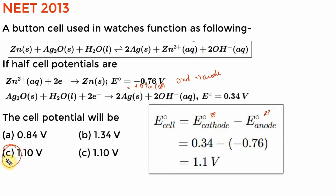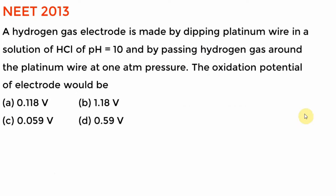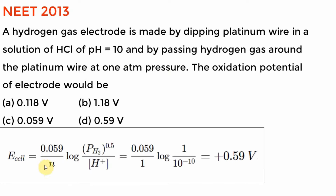Also from NEET 2013: hydrogen gas electrode made by dipping a platinum wire. The pH is given as 10, and hydrogen is being passed at 1 atm. The oxidation potential of the electrode would be... We just solved a similar equation before. Here is the setup of the cell: E_cell = E° cell minus 0.0591/n, but E° for the hydrogen electrode is 0.